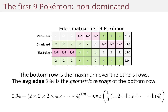And this means that on average, if we switch to the Pokemon which has the best edge against our opponent, we'll have a factor of almost three for our attacks, or they will have a corresponding disadvantage.